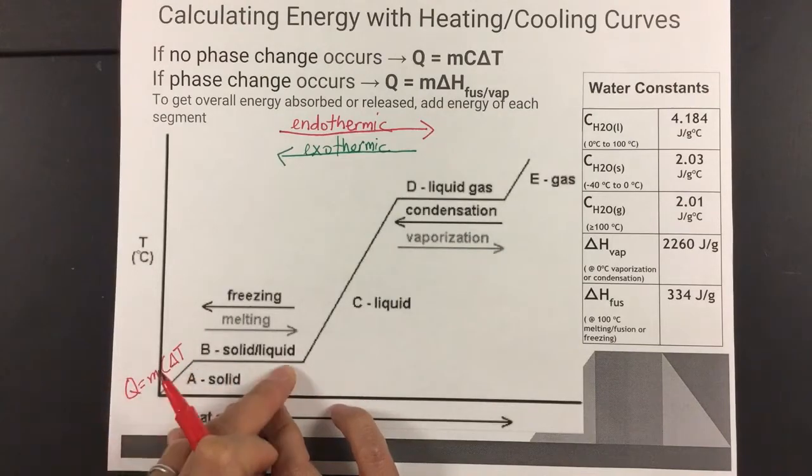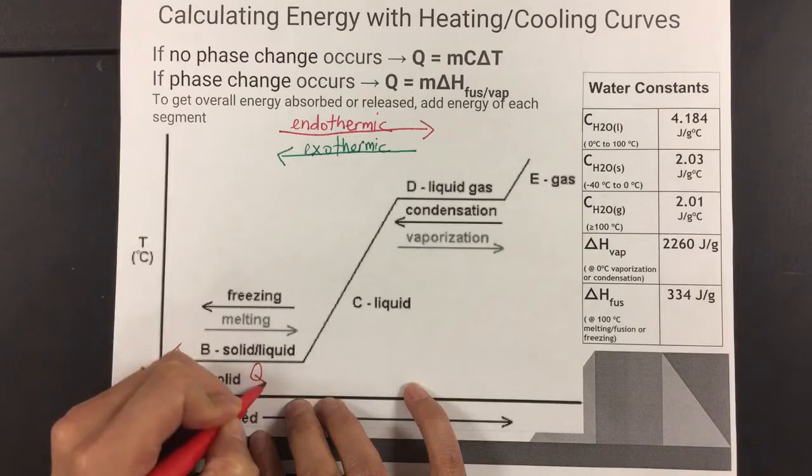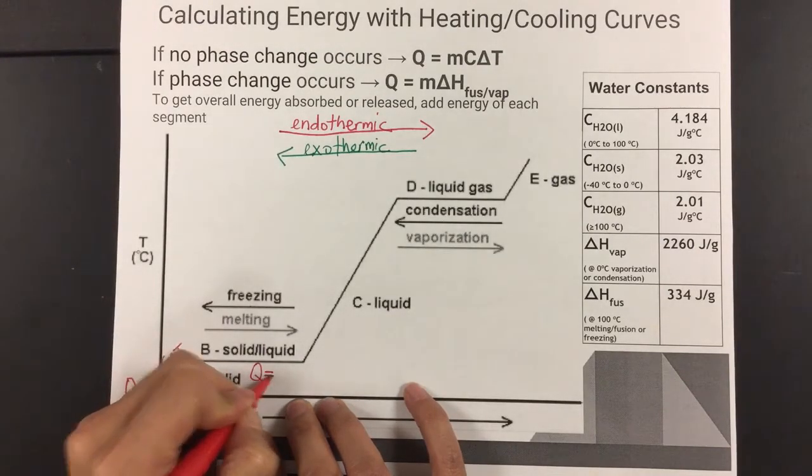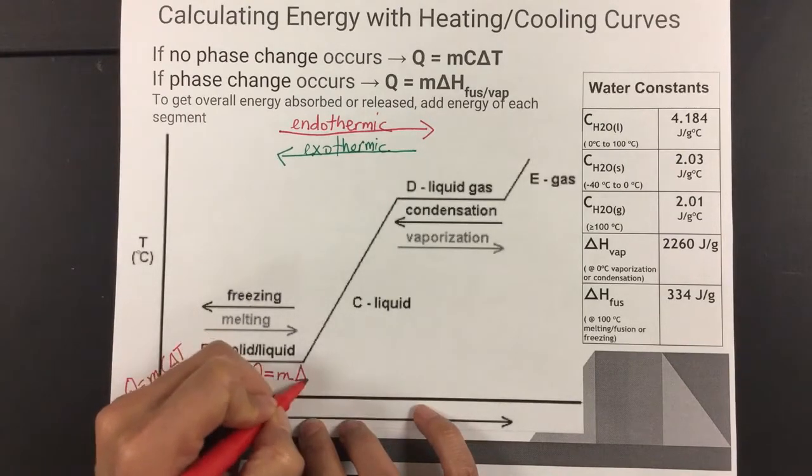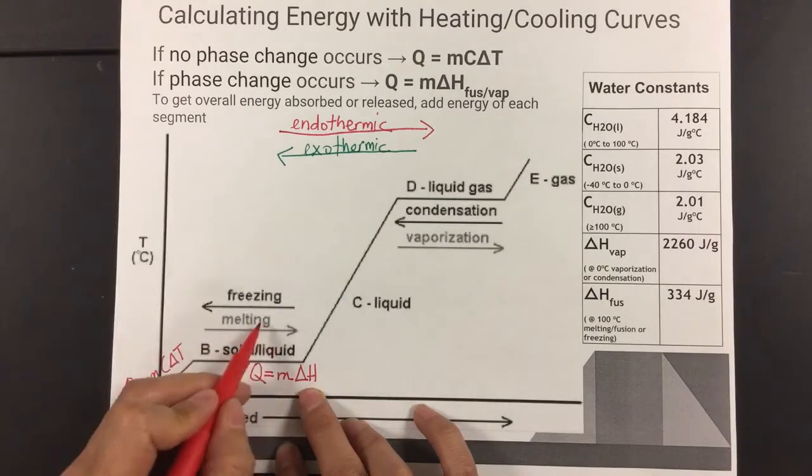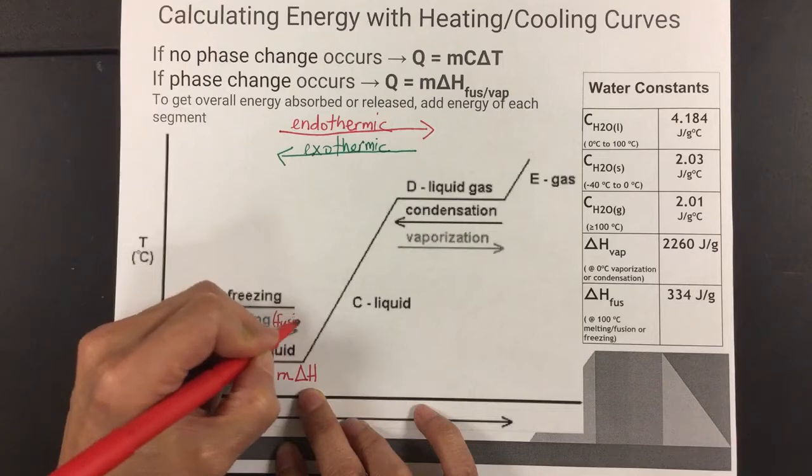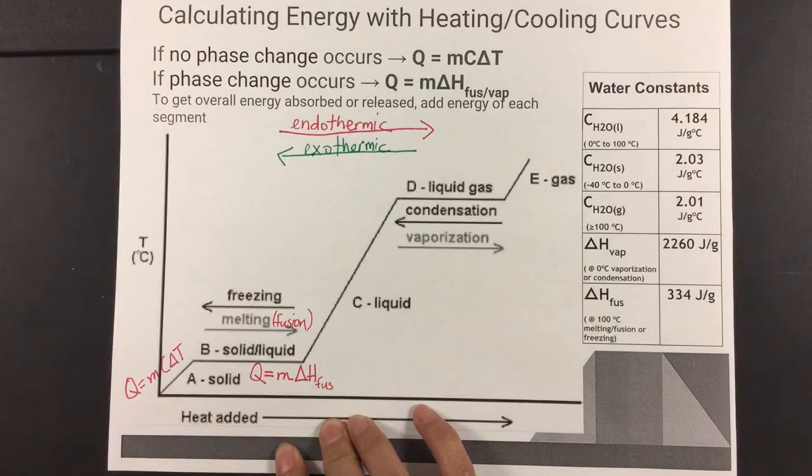Now, during the phase change, you will use a different equation because there's no change in temperature during this phase change. You're using Q equals m, which is mass, times ΔH. And this is a process of melting or freezing. So melting is also called fusion. And thus, you're using ΔH fusion during this period of time.